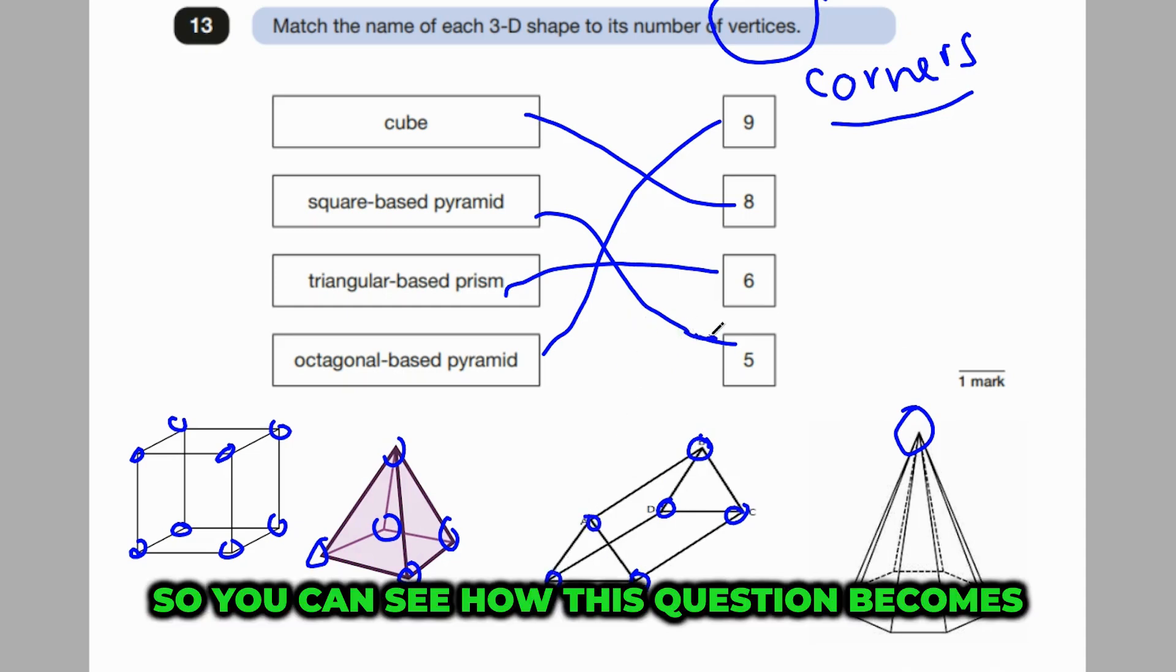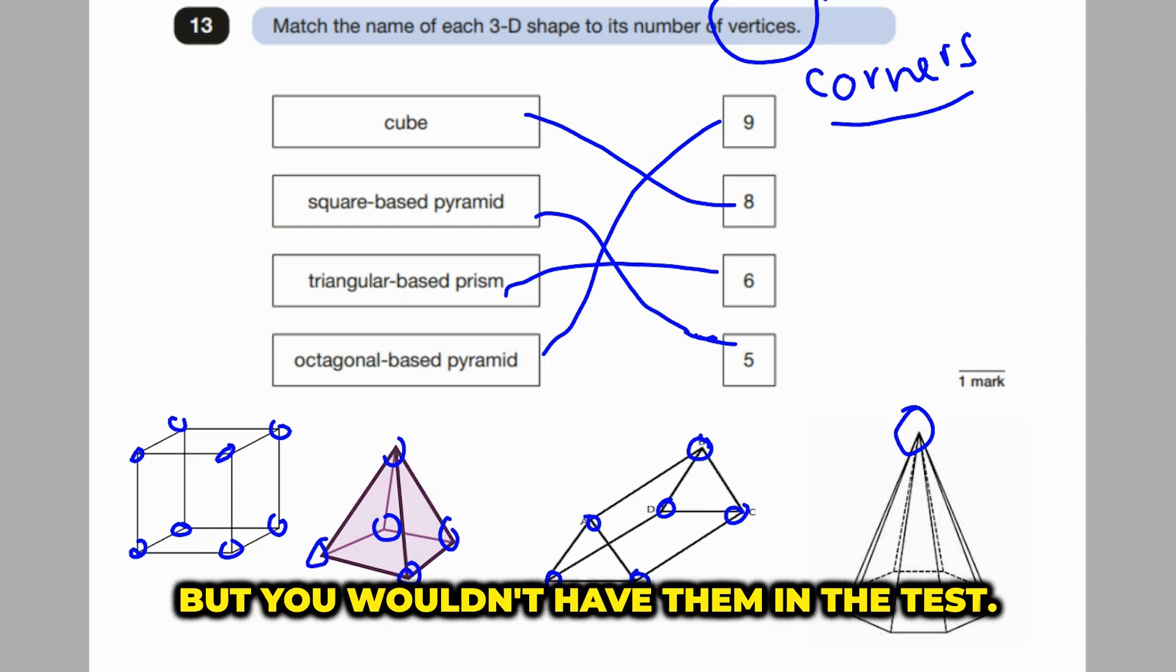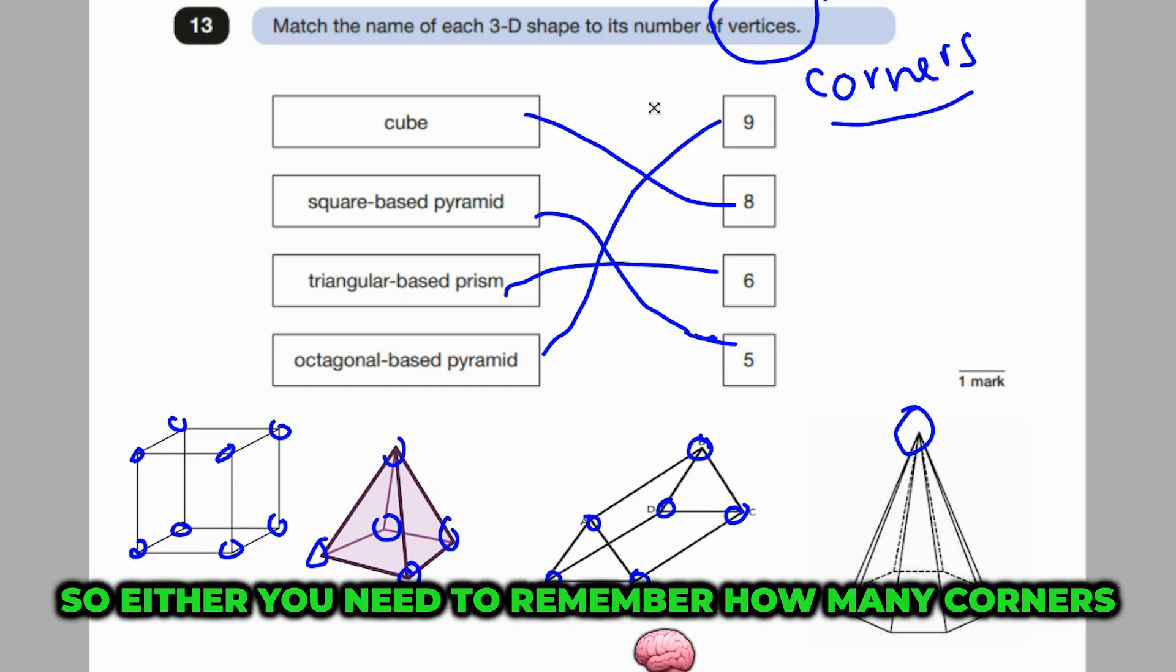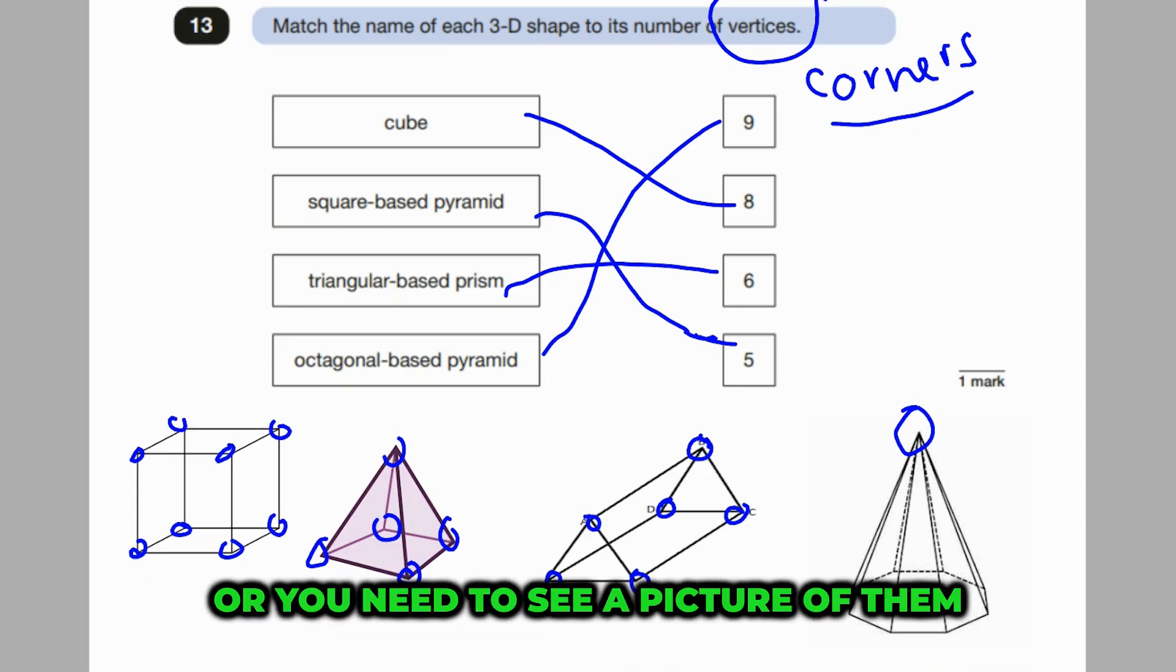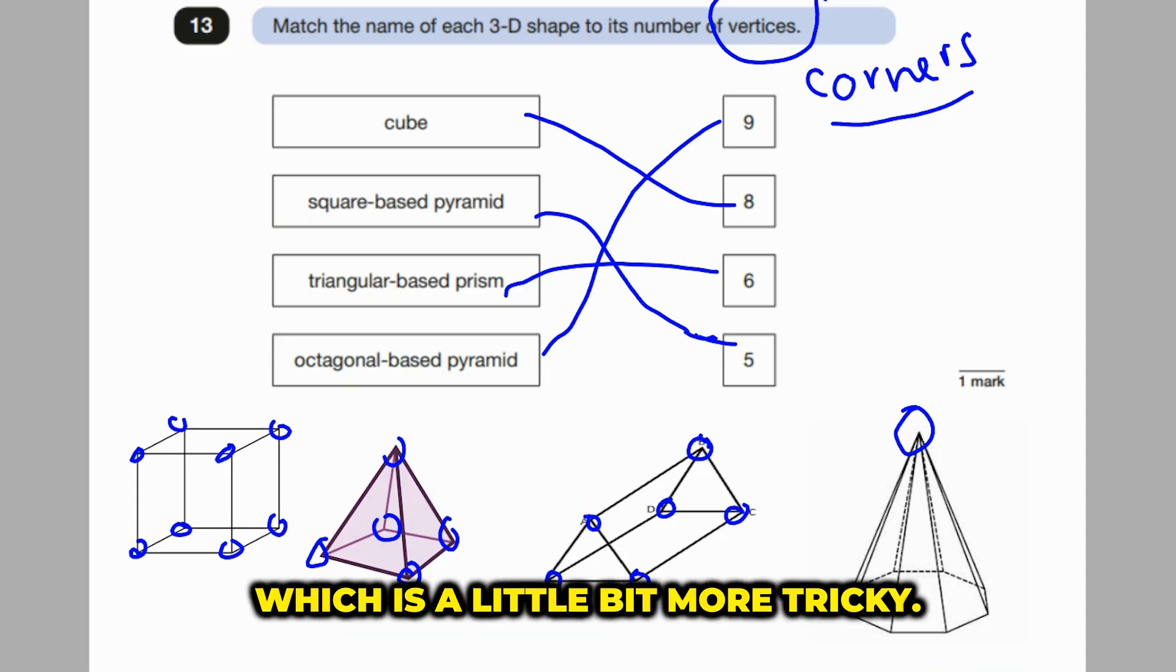So you can see how this question becomes a lot easier when you have the pictures, but you wouldn't have them in the test. So either you need to remember how many corners and faces and edges these kind of 3D shapes have, or you need to see a picture of them in your mind, which is a little bit more tricky.